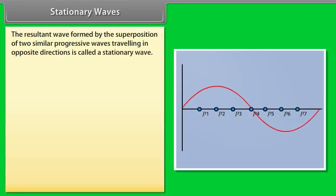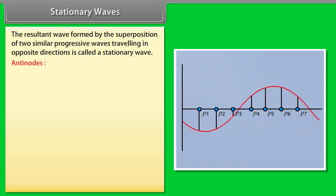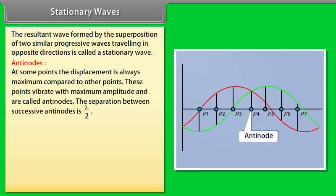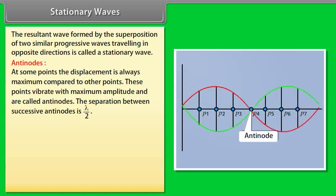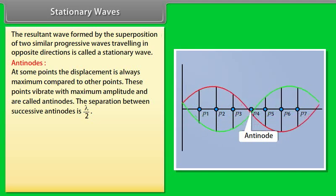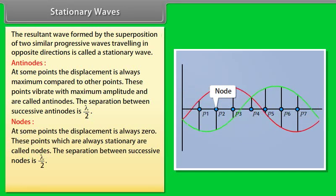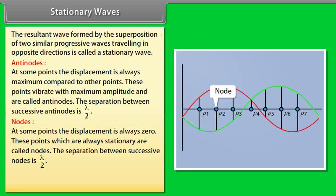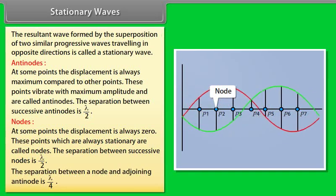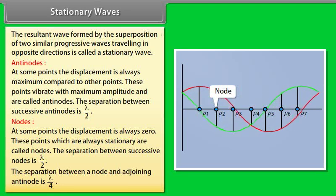Stationary waves: The resultant wave formed by the superposition of two similar progressive waves travelling in opposite directions is called a stationary wave. Antinodes: At some points the displacement is always maximum; these points vibrate with maximum amplitude and are called antinodes. The separation between successive antinodes is λ/2. Nodes: At some points the displacement is always zero; these points which are always stationary are called nodes. The separation between successive nodes is λ/2. The separation between a node and an adjoining antinode is λ/4.